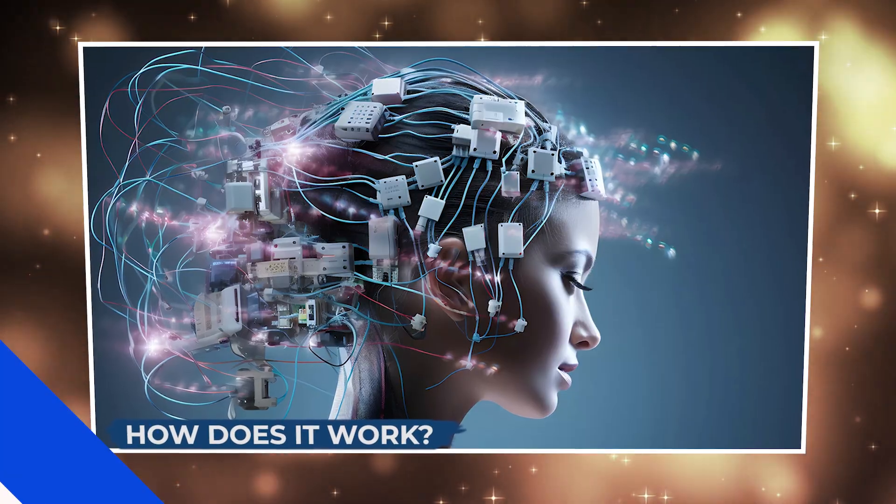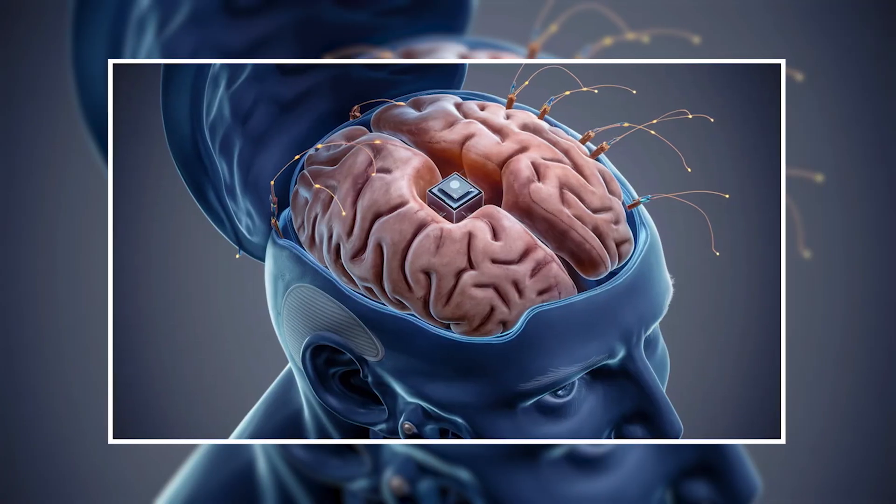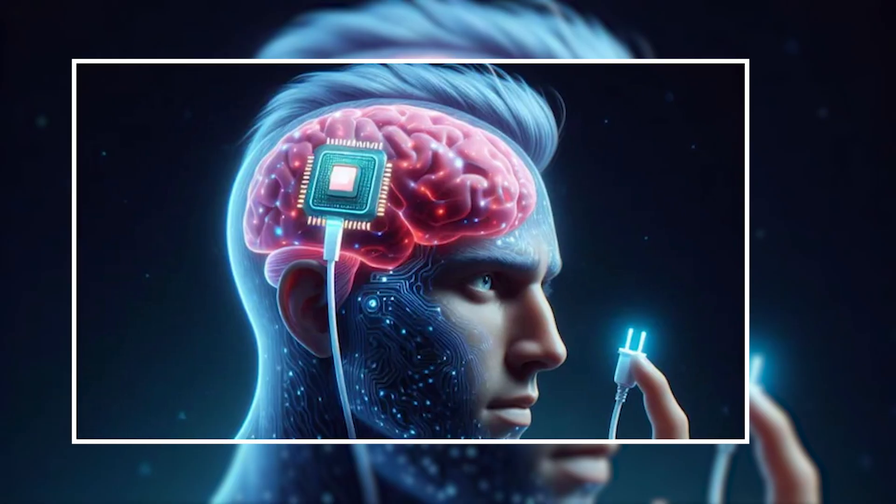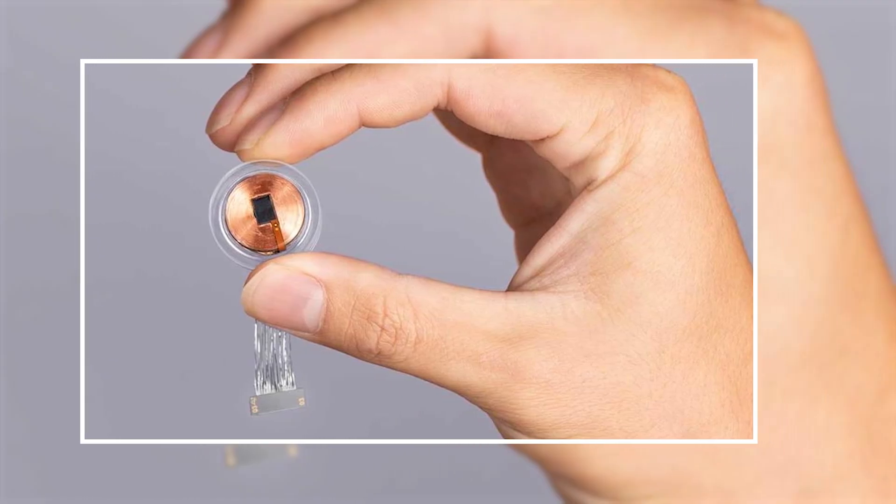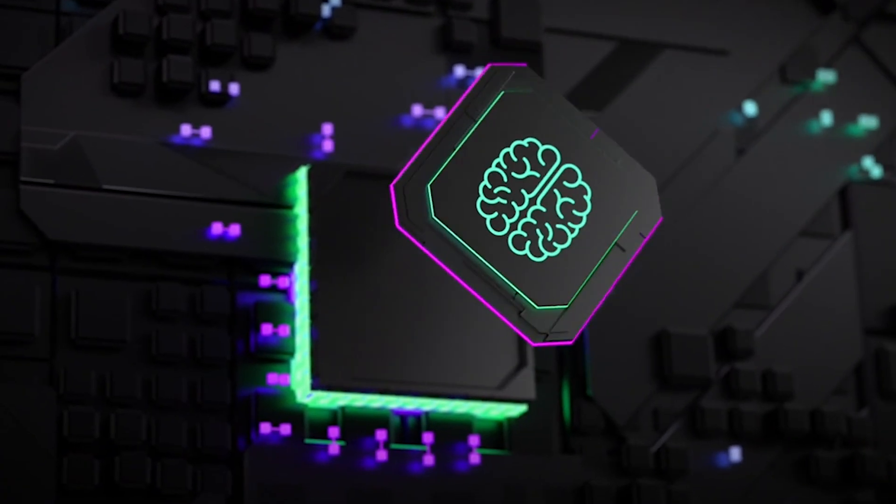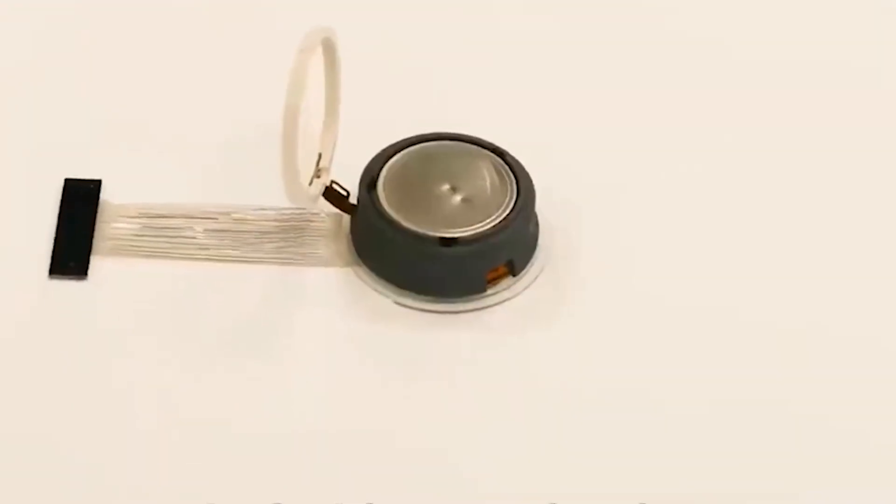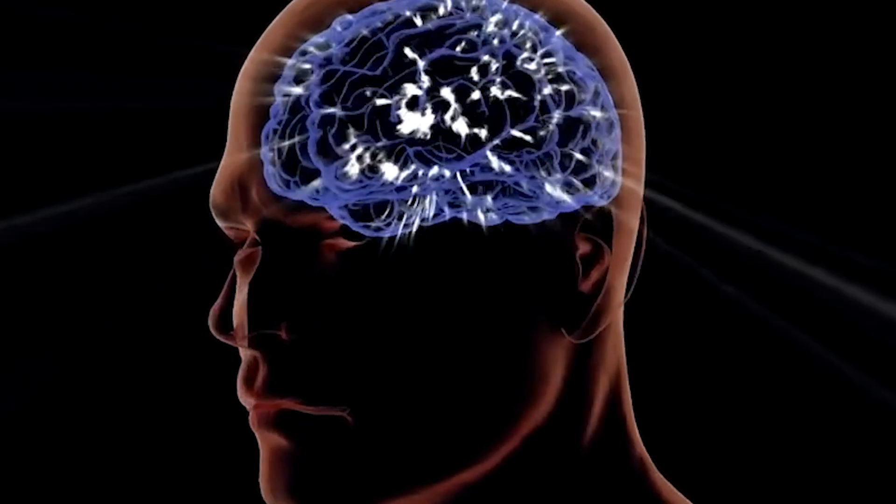How does Neuralink work? It all starts with a tiny device, one that looks no bigger than a coin. This is the Neuralink chip, and it's designed to sit just beneath the skull, resting on the surface of the brain.